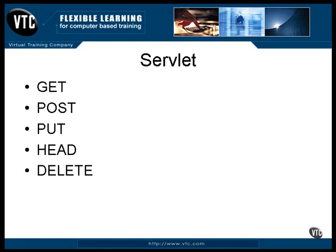With a DELETE command, the resource identified by a URI is simply deleted. The TRACE command is an echo — it simply returns the command to the requester. The OPTIONS messages are used for conversations between the client and the server. The client can use this kind of message to ask for information on the server's capabilities.